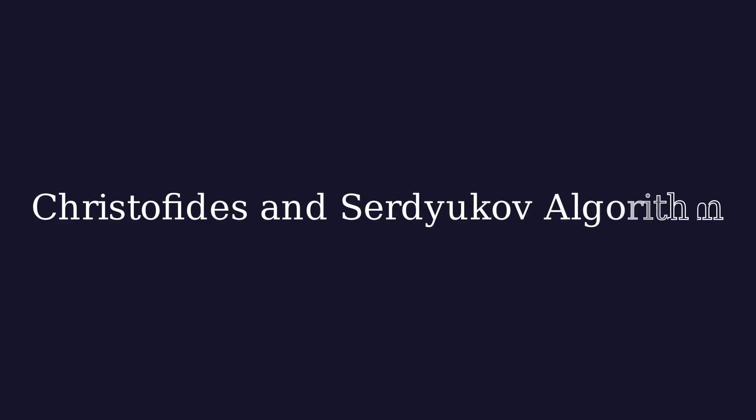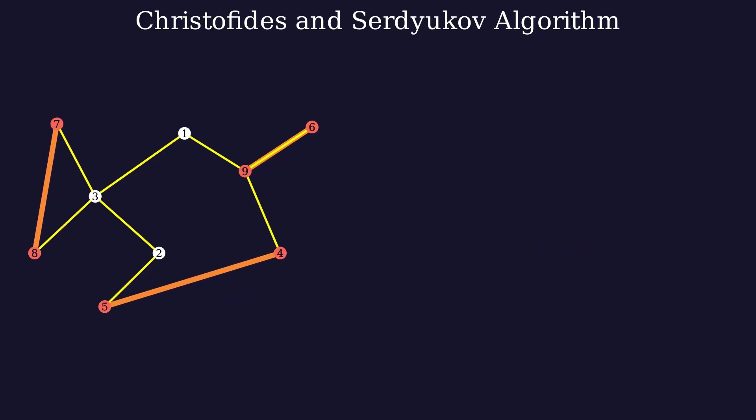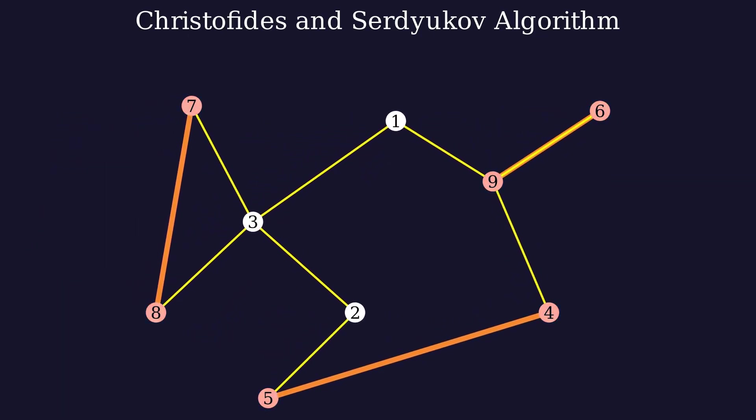A more advanced algorithm called the Christofides and Serdyukov algorithm offers an even better solution. We start by finding the minimum spanning tree. In a valid path, each node is connected to exactly two other nodes. However, in the minimum spanning tree, some nodes might be connected to an odd number of nodes. So we need to pick these odd connected cities and make pairs between them in the most optimal way possible. After forming these pairs, we add the edges created by the matching process to the minimum spanning tree. If any edges overlap, we consider them as double edges.